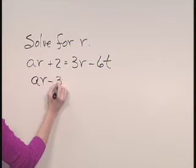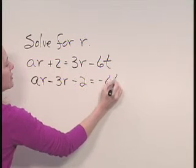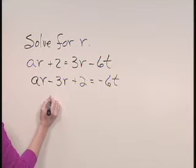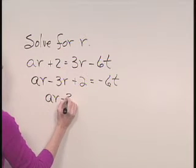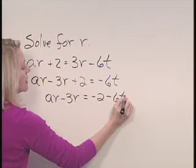So we have AR minus 3R plus 2 is equal to negative 6T. Now, we'll subtract 2 from both sides. AR minus 3R is equal to negative 2 minus 6T.